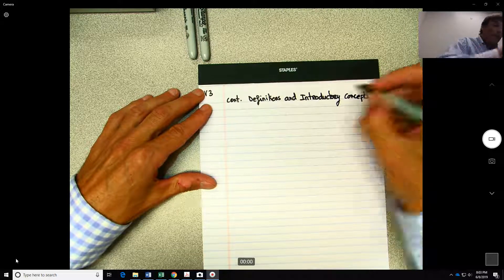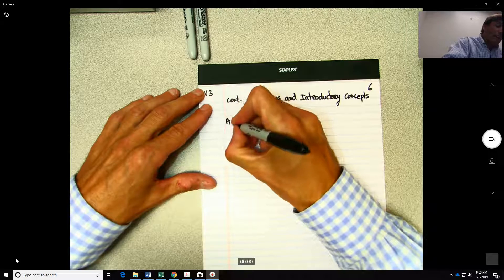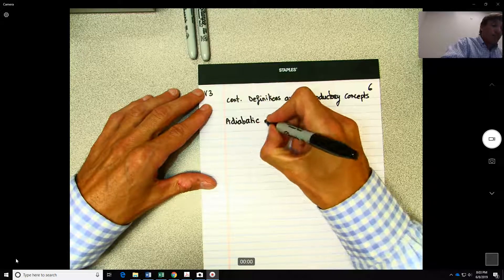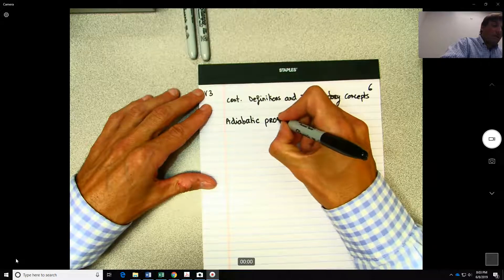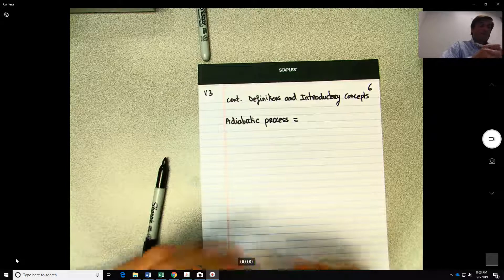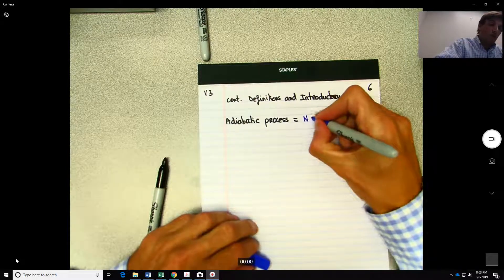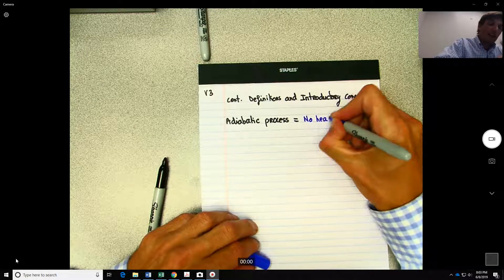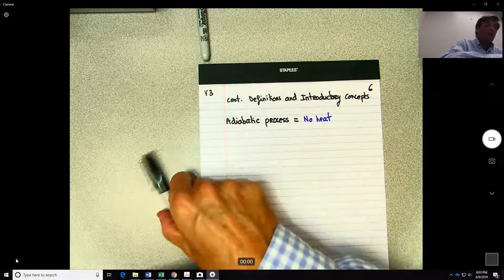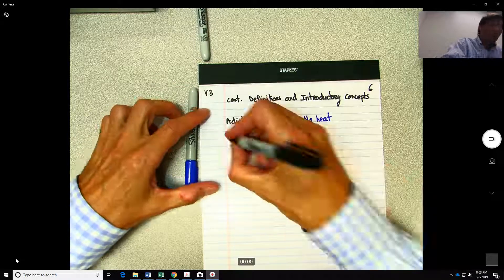So last time I defined what was an adiabatic process, which basically indicates no heat is added or removed from the system. But I mentioned other types of processes and I forgot to write them down.